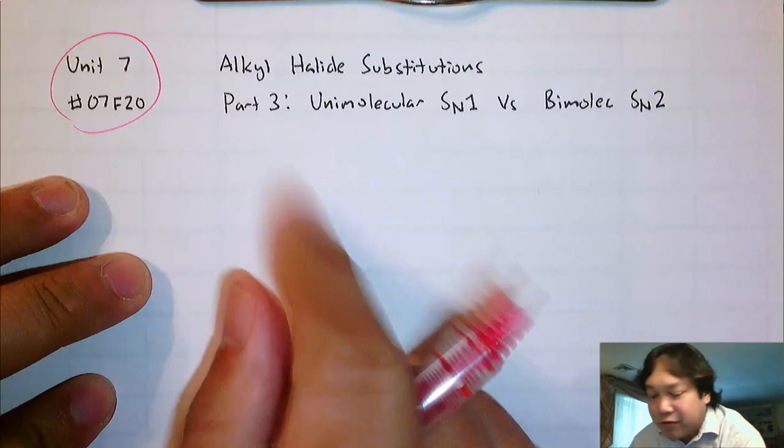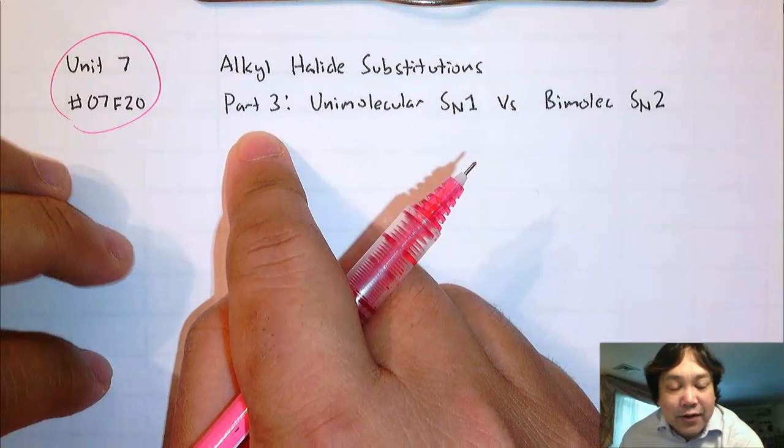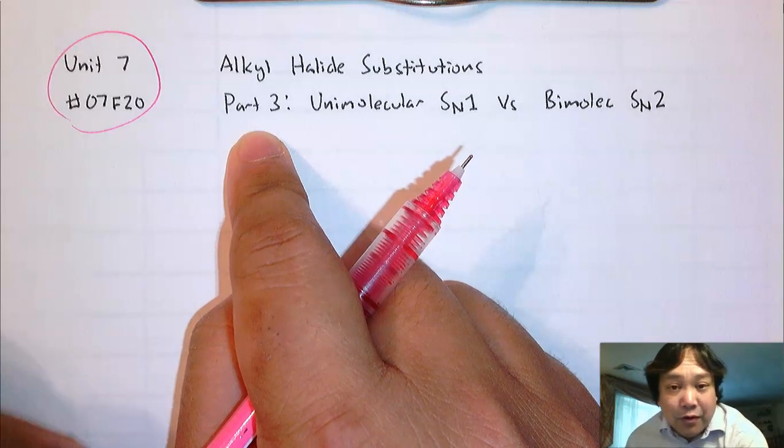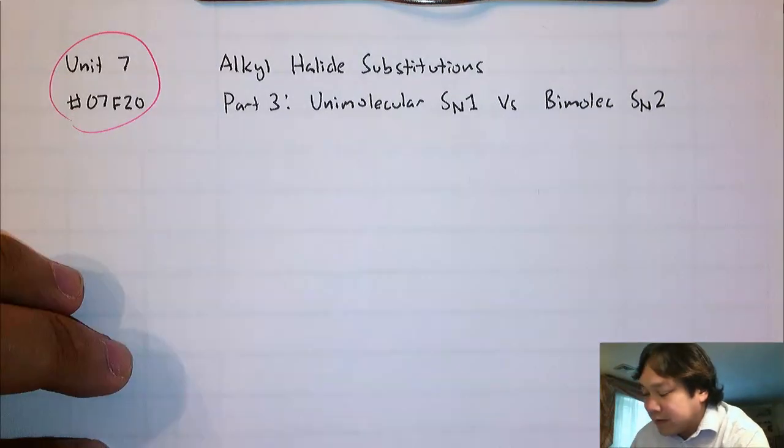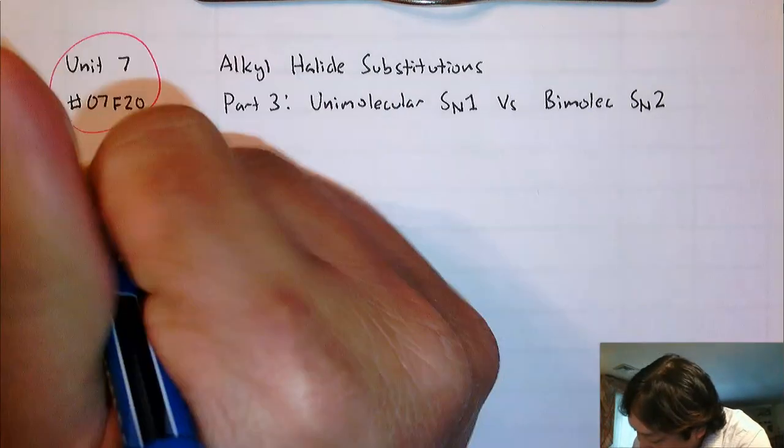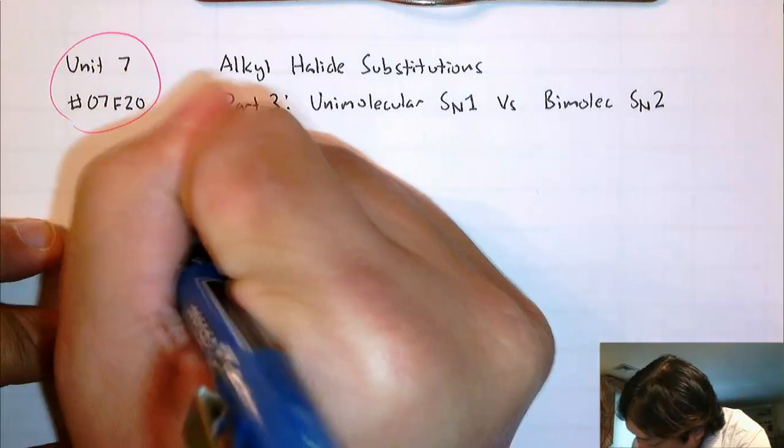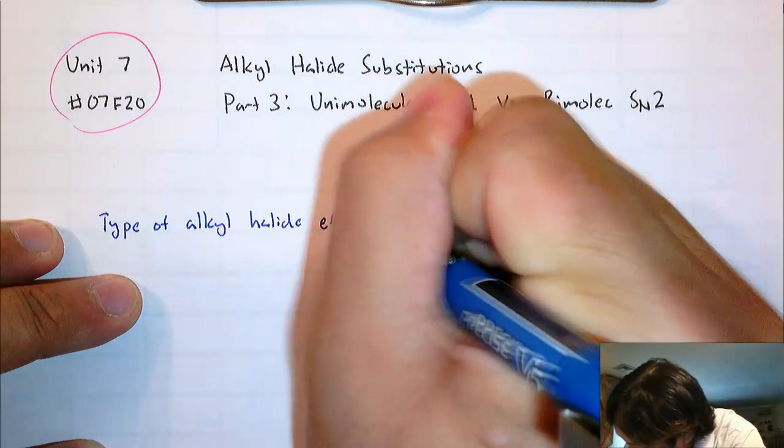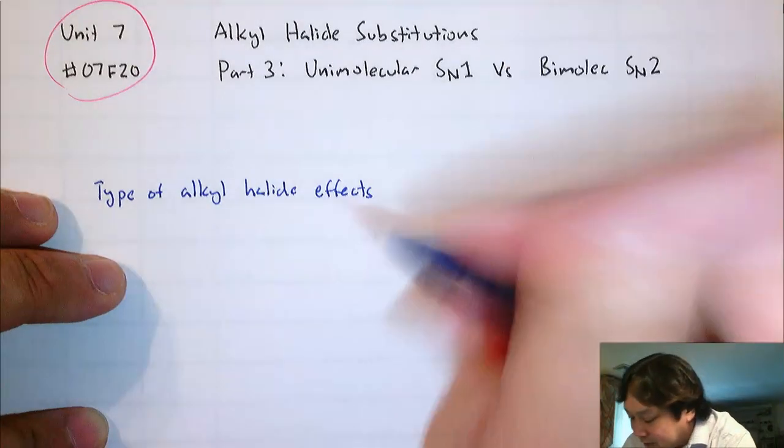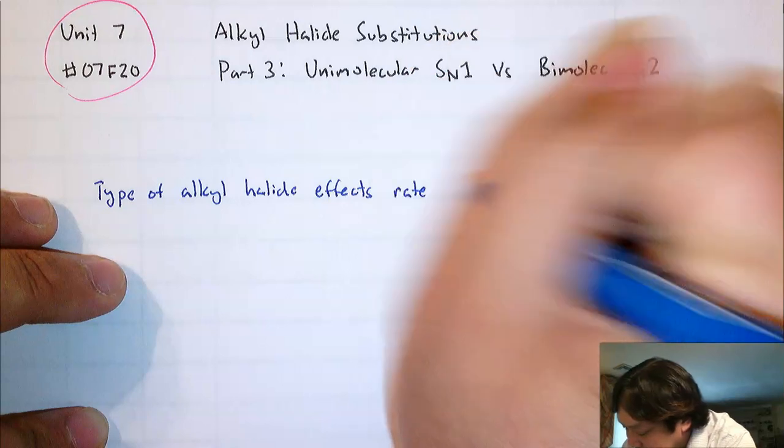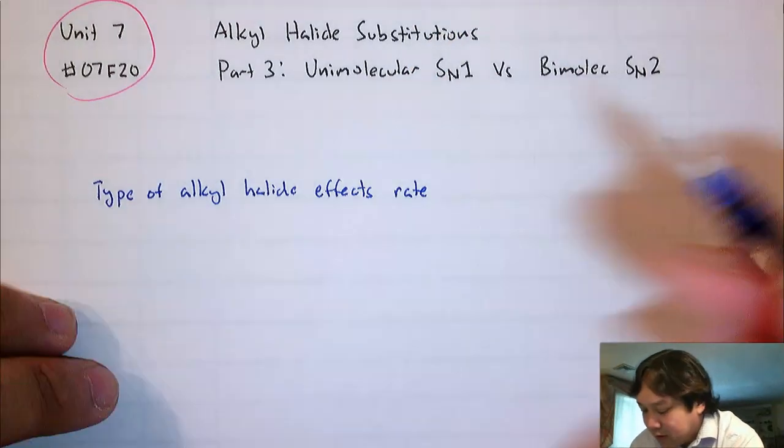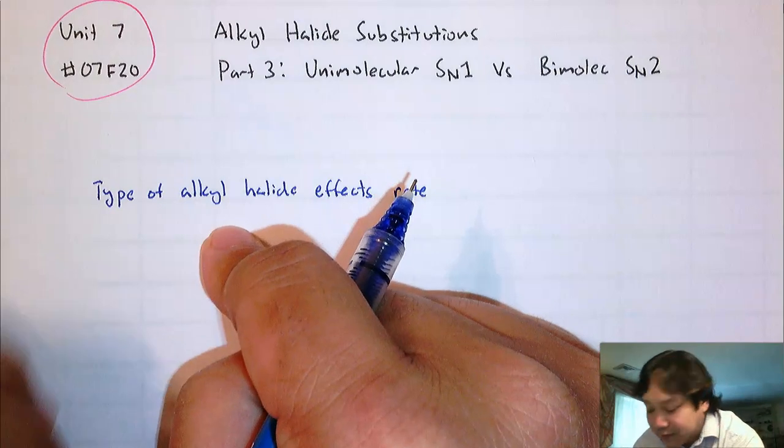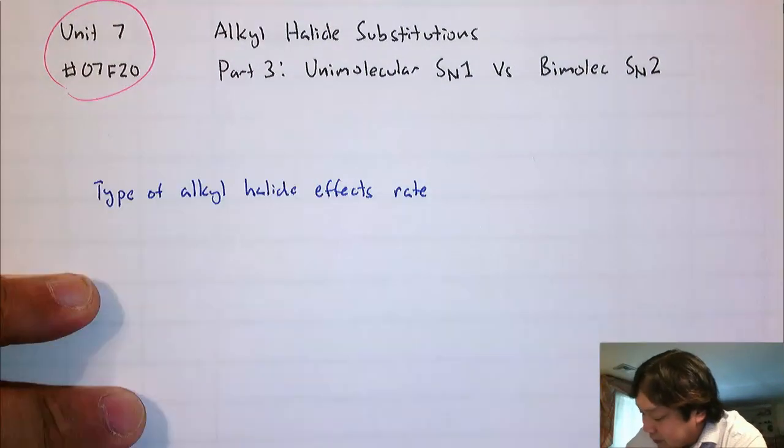Like I said, this is part three. Parts one and two compare the stereochemistry, the kinetics, what type of nucleophile you have, whether it's good or poor. Over here, we are going to discuss the type of alkyl halide. And the type of alkyl halide will affect the rate of the reaction. Now, with all things being equal, we're going to see that certain type of alkyl halides favor SN1 and other types favor SN2. And I want to put that disclaimer, with all things being equal.